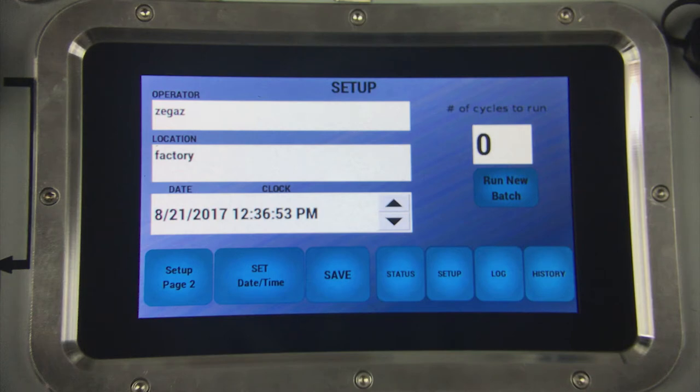The date and clock fields are used to enter the current date and time for the region you are operating in. This will be the time used by the system to timestamp the test results. The number of cycles to run box is where you enter the number of consecutive test cycles you would like the analyzer to perform. One to 30 cycles in one batch. Enter the number of cycles and press run new batch to begin.